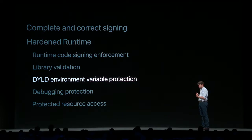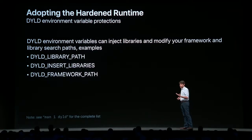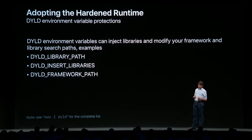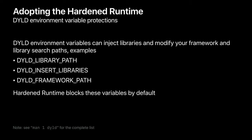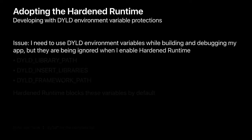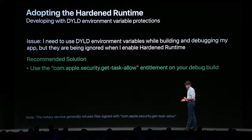DYLD environment variables can be very useful during development to load debug libraries or test frameworks into your app. But they can be dangerous because everything you can do during building and testing, an attacker can do on a customer system to take advantage of privileges or data available to your app. Because of this, the hardened runtime blocks these variables by default when you ship with it. If you need to use DYLD environment variables during debugging, use the getTaskAllow entitlement on your debug build. Xcode automatically puts this on for debug builds and removes it for release builds. Note that if you're using a custom workflow, the notary service in most cases doesn't accept binaries with the getTaskAllow entitlement, so make sure you remove it before submitting your release build.